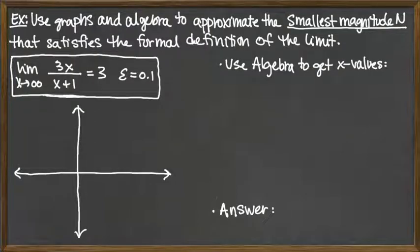In this example, we're going to use graphs and algebra to approximate the smallest magnitude n that satisfies the formal definition of the limit. The limit that we're looking at here is the limit as x goes to infinity of a rational function 3x over the factor x plus 1, and that limit value is equal to 3.